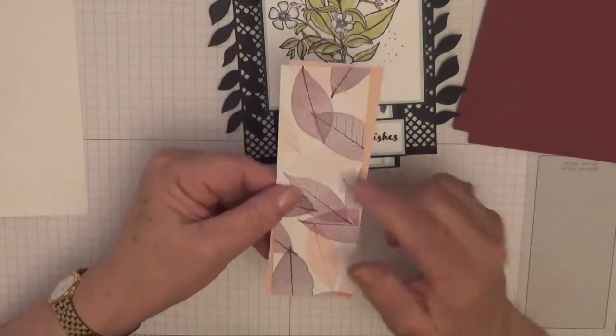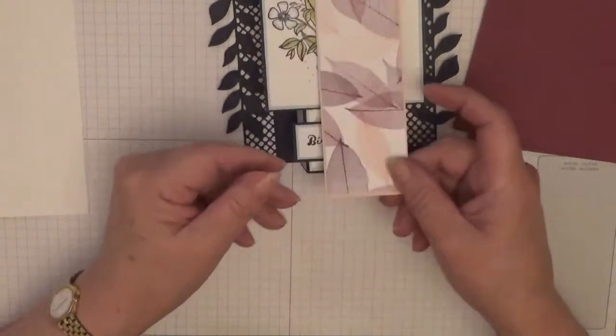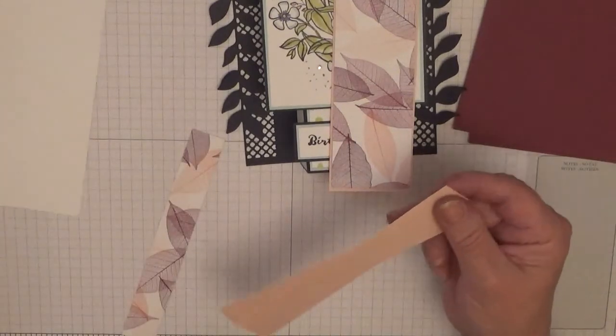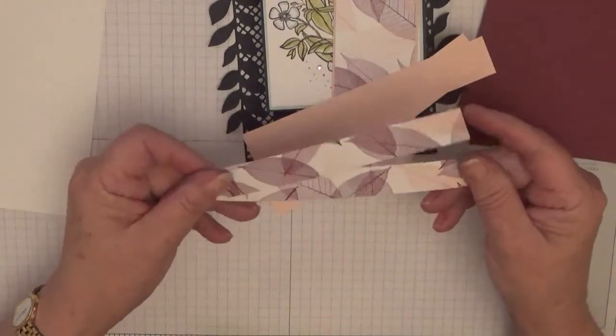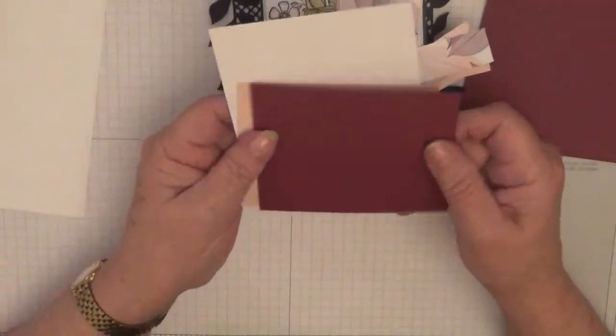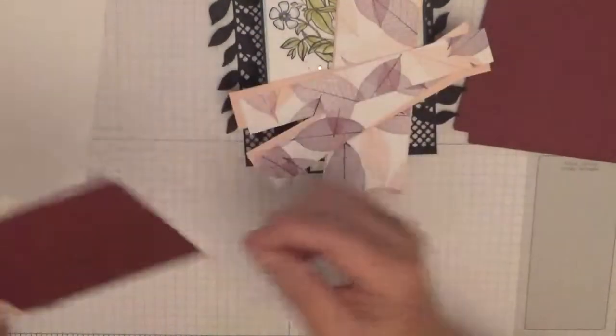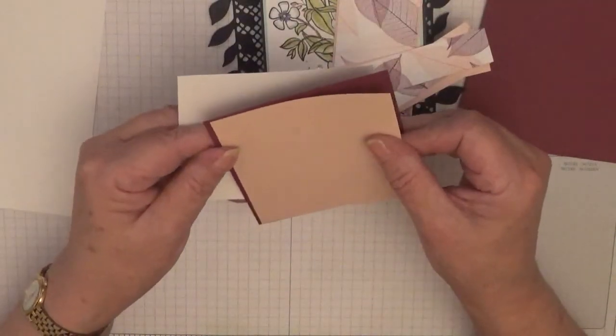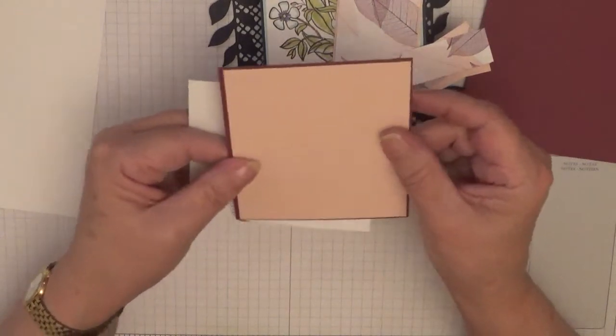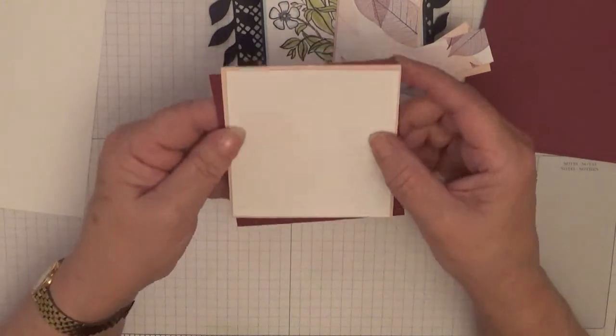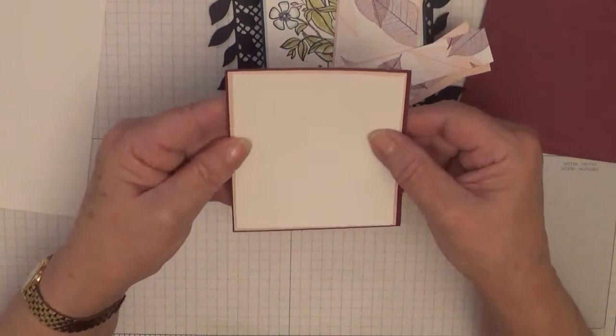I'm using the one with the Rich Raspberry leaves. You also need two Blushing Bride pieces at seven eighths by five and five eighths, and two pieces of designer series paper at three quarters of an inch by five and five eighths. You'll need a piece of Rich Raspberry at three and a half by four inches, then a piece of Blushing Bride at three and seven eighths by three and three eighths, and a piece of Whisper White at three and a quarter by three and three quarters.